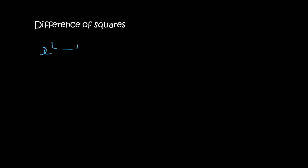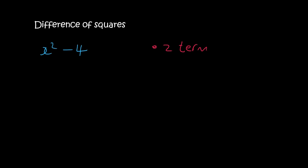A new type of factorizing is the following — they'll typically look like this. We need two terms; we've got two terms here. They must be separated with a minus — have we got a minus? Yes. And lastly, we must have square numbers.